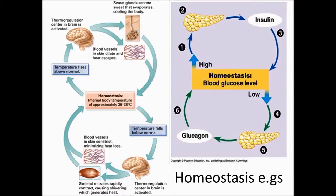When the brain detects the blood glucose level is too low, the pancreas releases glucagon. This breaks down storage of glycogen in the muscle and liver cells to release glucose into the blood.